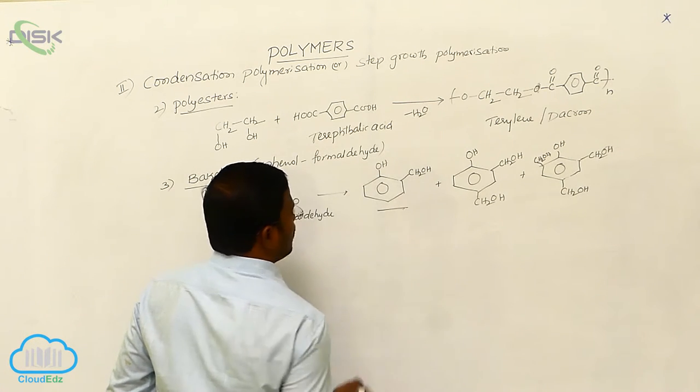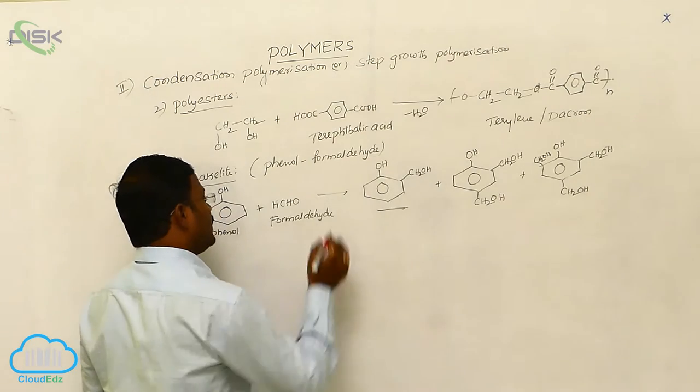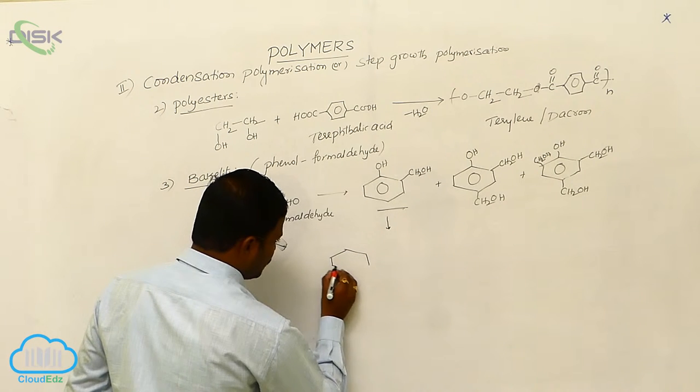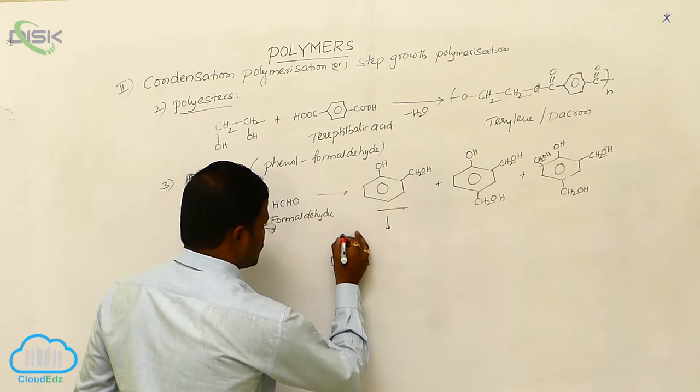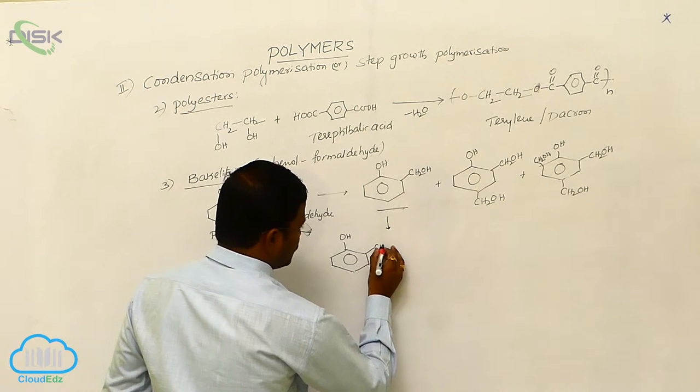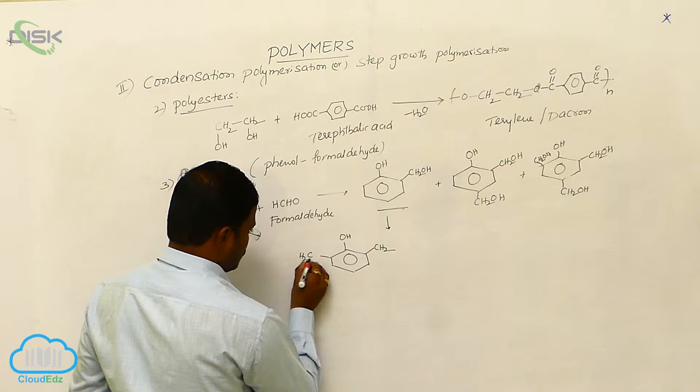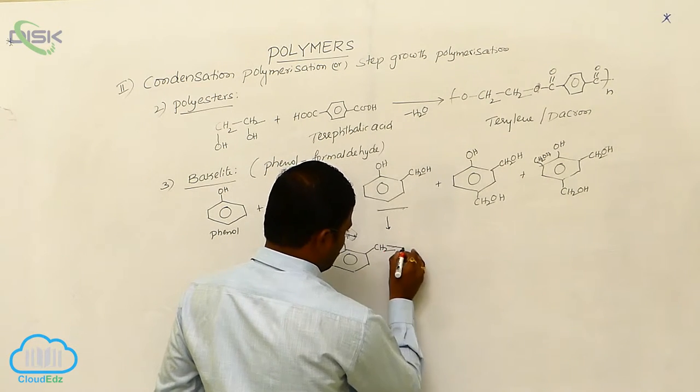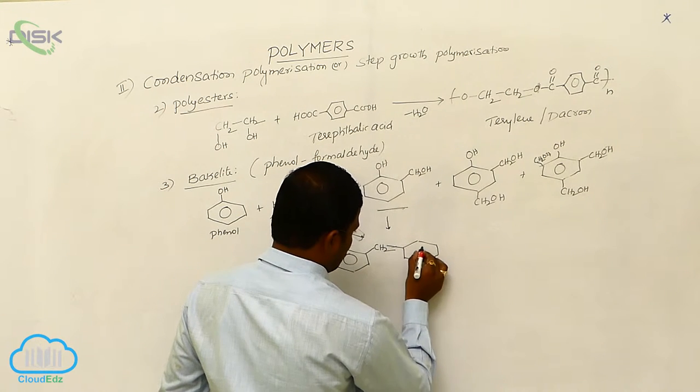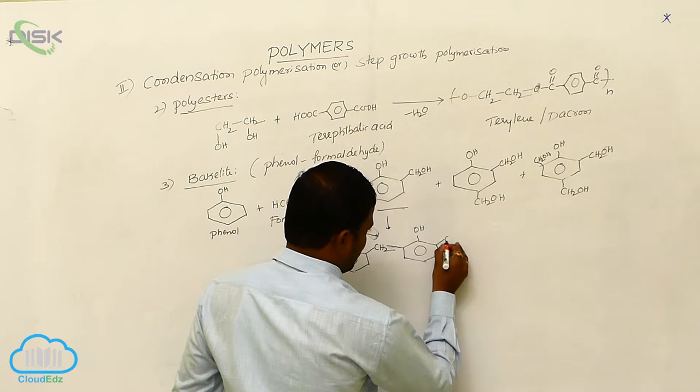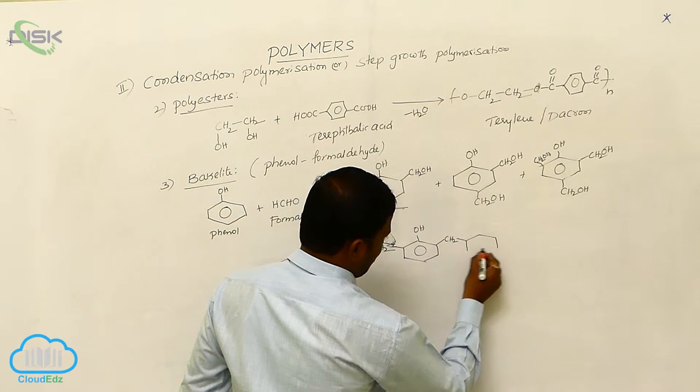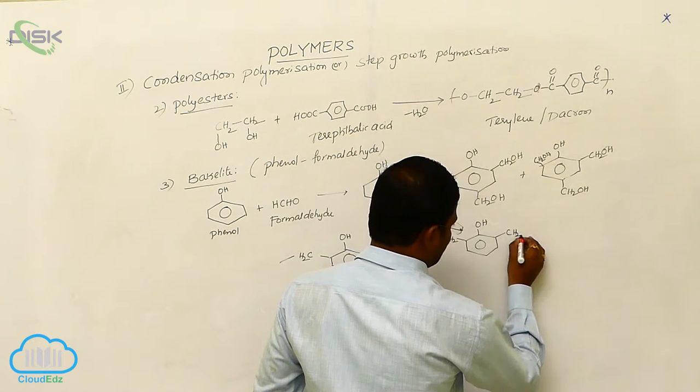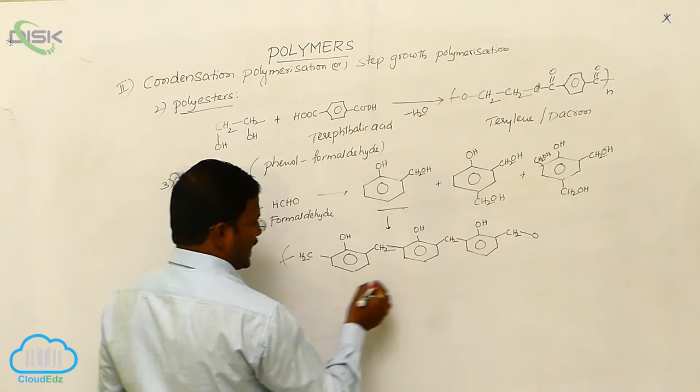The produced hydroxymethylphenols react with each other and finally we are going to produce OH CH2, OH CH2OH, CH2OH, CH2OH, CH2OH. A long chain will be expected.